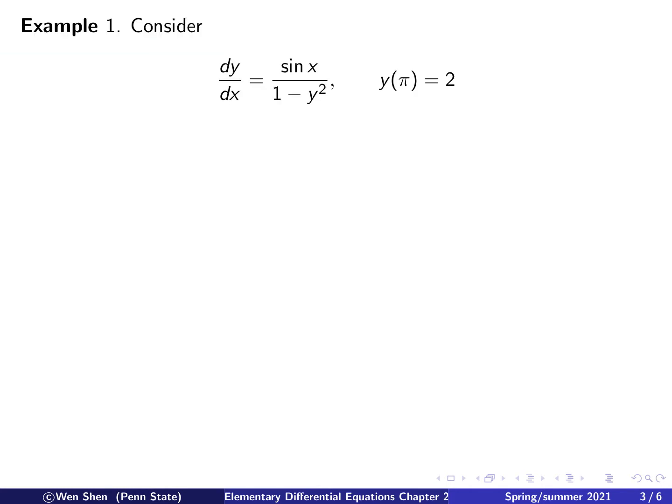To demonstrate the method, we now take a simple example. Let's consider this equation: dy over dx equals sin(x) over 1 minus y squared, and I have initial condition y at pi equals 2. We immediately observe that this is a separable equation. It's written here as a function of x over a function of y. So let's move this term to the left. We have all the y's to the left, and move the dx to the right, and we have all the x on the right. And we take the integrations on both sides.